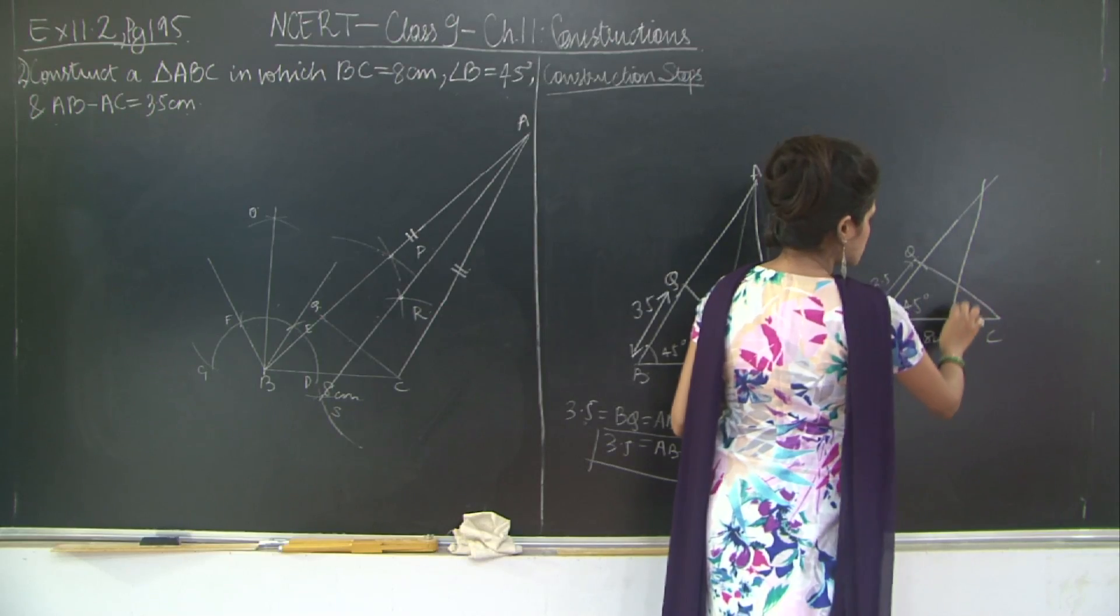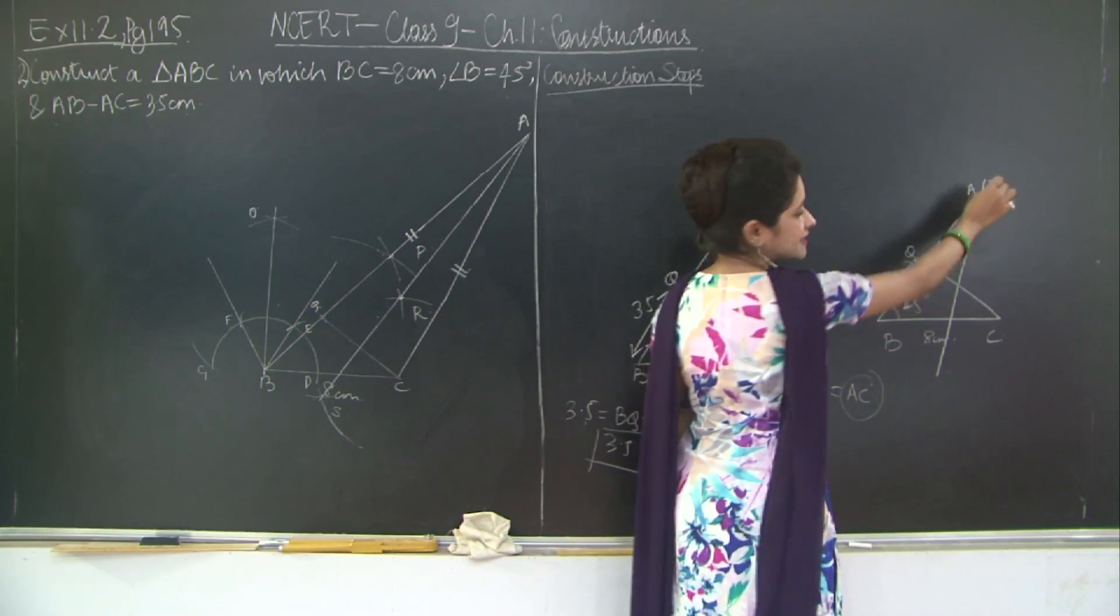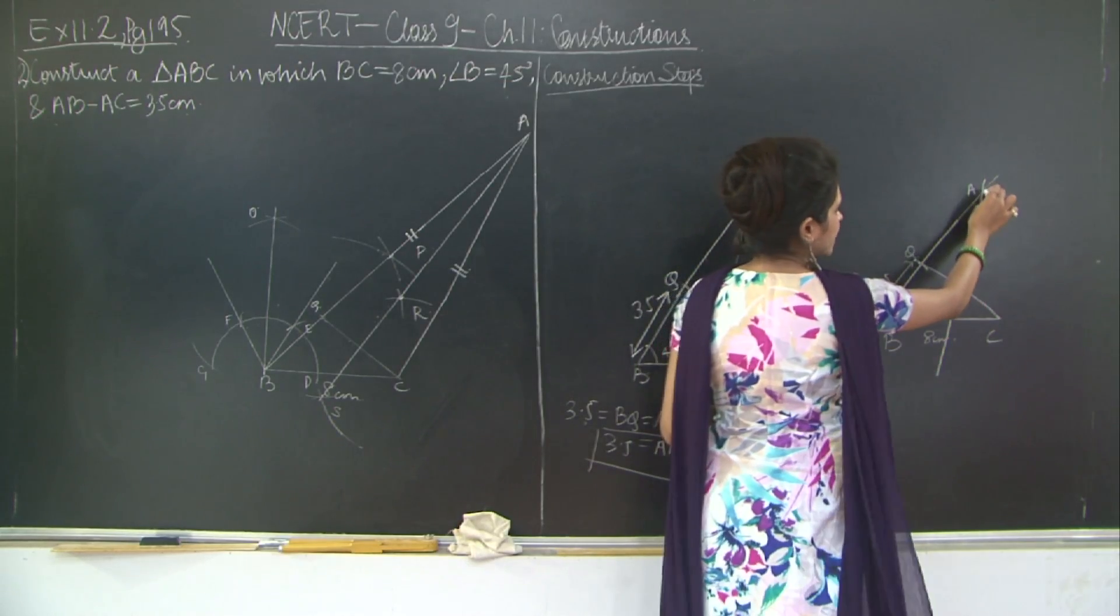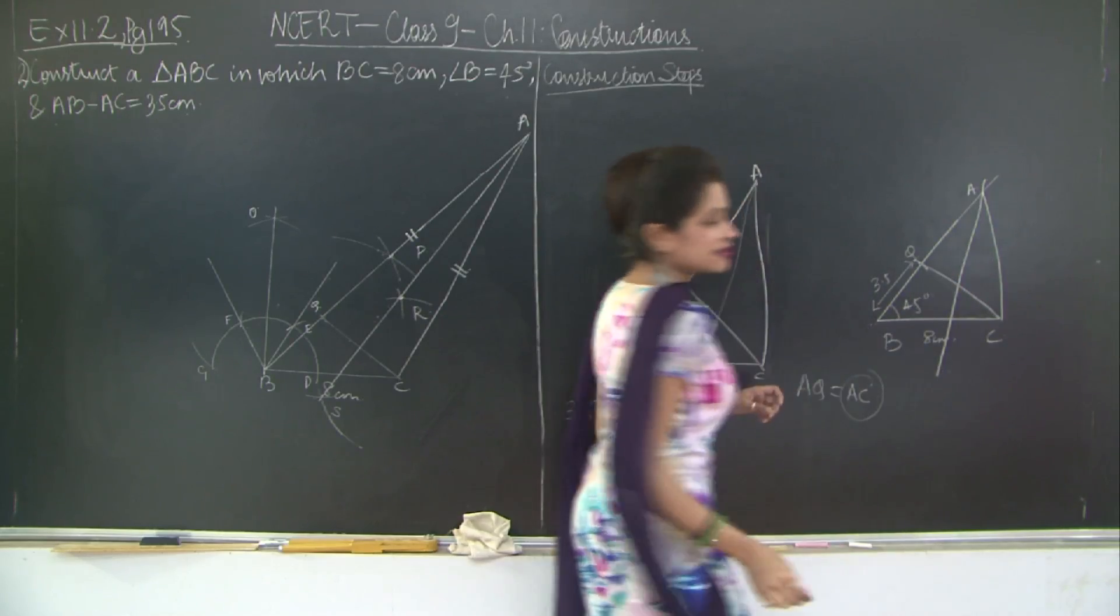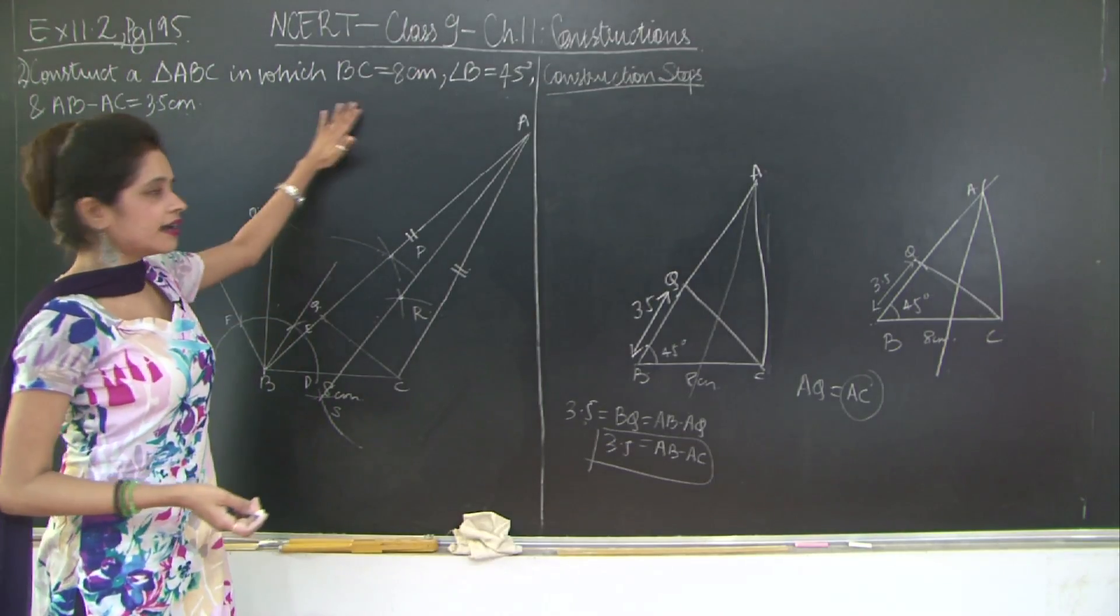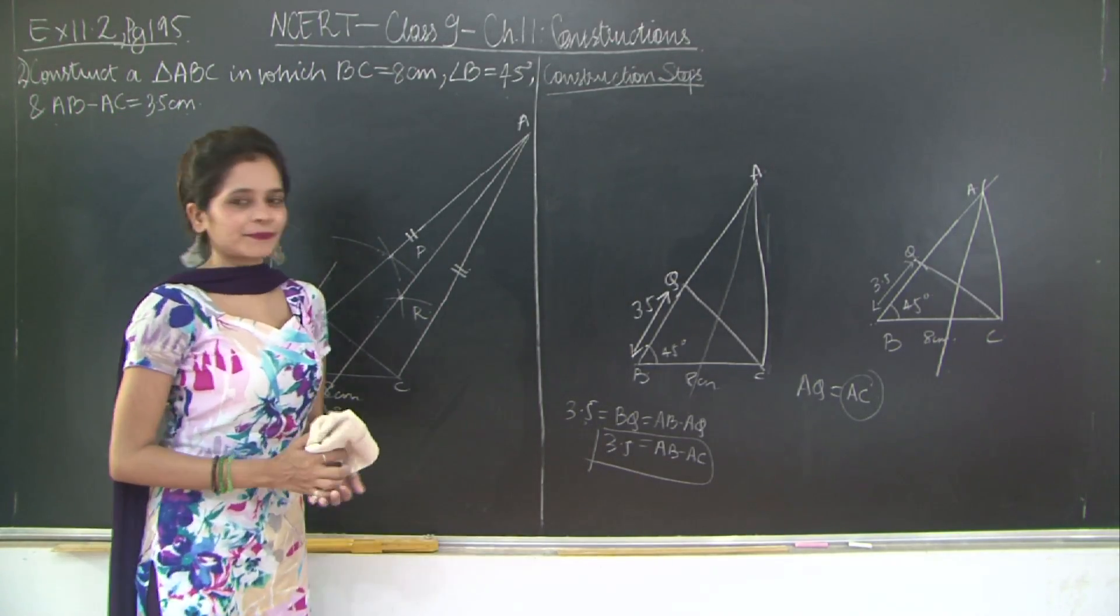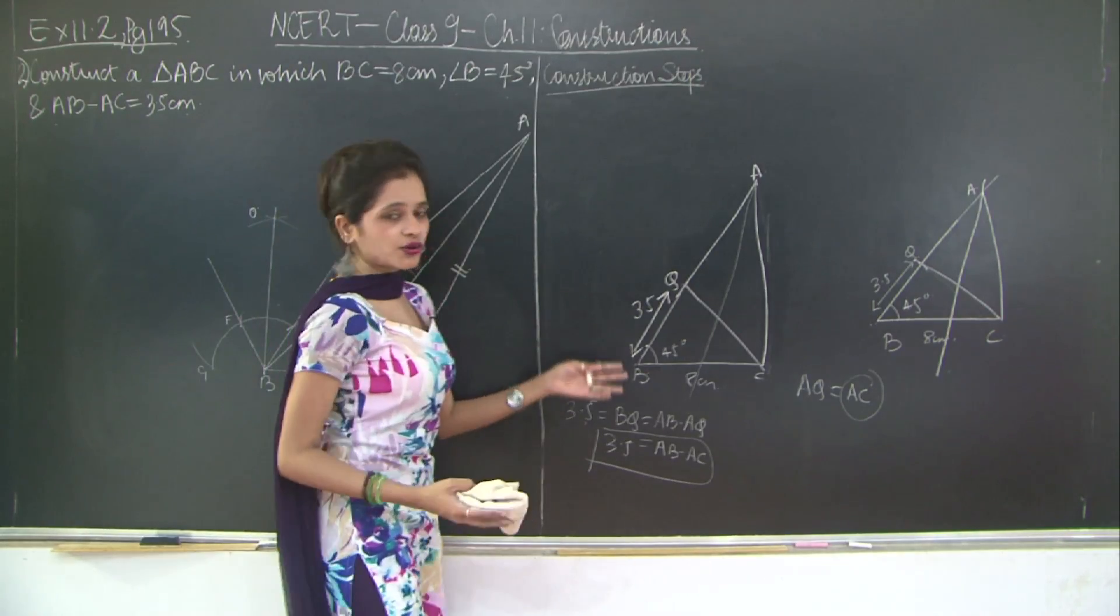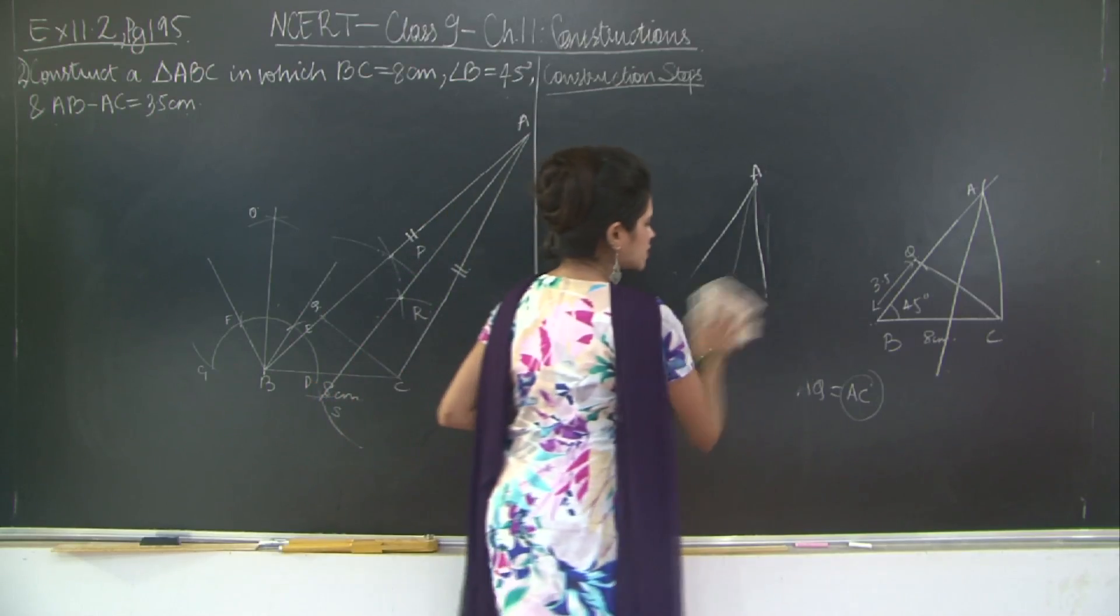So if this was the perpendicular bisector of QC and we let it intersect BQ, the extended line BQ at point A, and then we joined AC. So this triangle ABC is the given triangle according to the construction sum. So let's go, please take a note of this. We will go ahead and write the construction steps for now.